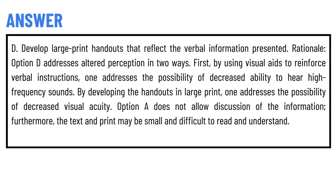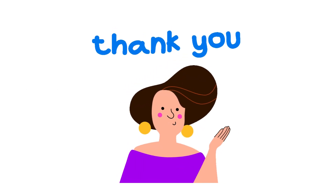Rationale: Option D addresses altered perception in two ways. First, by using visual aids to reinforce verbal instructions. Second, it addresses the possibility of decreased ability to hear high-frequency sounds by developing the handouts in large print, which also addresses the possibility of decreased visual acuity. Option C does not allow discussion of the information, and the text in pamphlets may be small and difficult to read and understand.